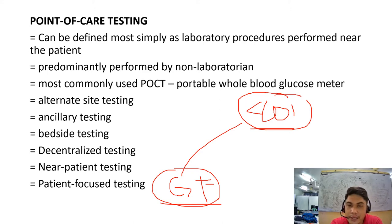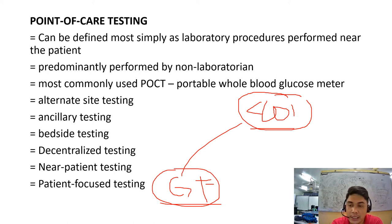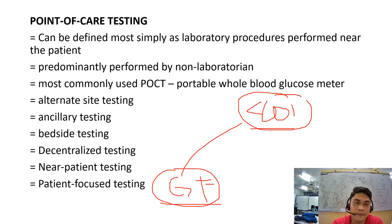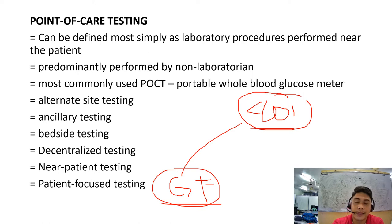For point-of-care testing, it is predominantly performed by non-laboratorians. For example, a nurse trained in POCT can perform the test, as can physicians. There is no need to ask the medical technologist to perform this type of test. For example, testing or determination of glucose concentration using a blood glucose meter can be performed by non-laboratorian staff.